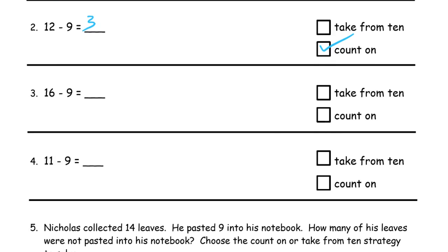16 minus 9, those aren't very close numbers. So I'm going to take from 10. 10, 6. When you take 9 from that 10, you're going to have 1 left, and 1 plus 6, 7. And that's take from 10.